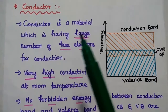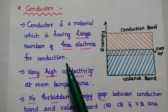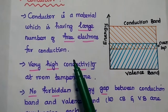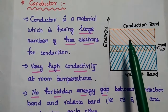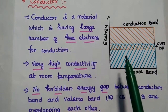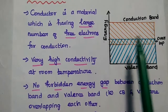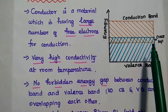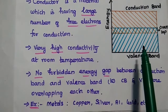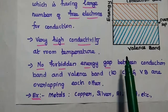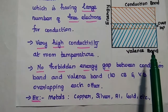Conductor is a material which has a large number of free electrons for conduction. There is huge movement from the valence band to the conduction band, meaning both bands are overlapping each other. Overlapping means there is no forbidden energy gap, so very high conductivity is available with conductors at room temperature.